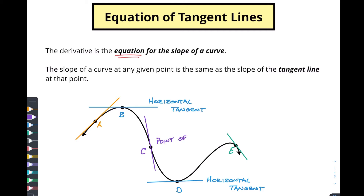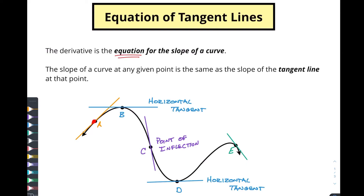Point C is called the point of inflection. The point of inflection has two things going on: first, it's where the tangent line hops from the outside of the curve on one side to the outside of the curve on the other side. Second, the tangent line cuts through at that spot. Inflection is where the curvature changes — this part of the curve is curving downwards and this part is curving upwards. We'll be talking about the concavity of curves in future videos.